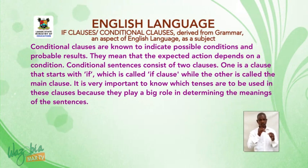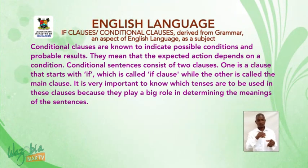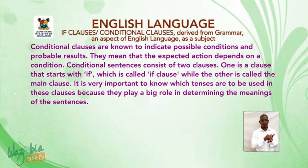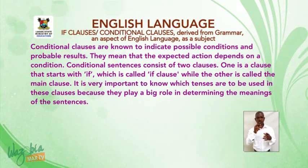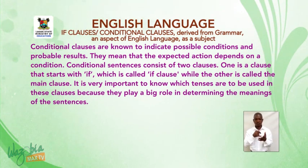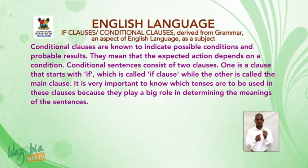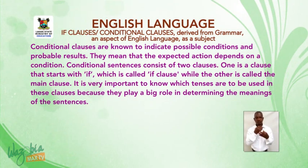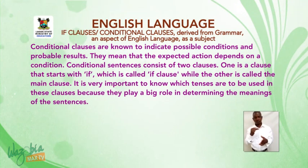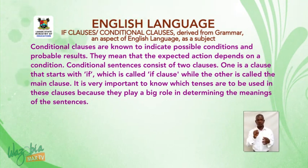Conditional clauses are known to indicate possible conditions and probable results. They mean that the expected action depends on a condition. Conditional sentences consist of two clauses: one is a clause that starts with 'if', which is called the if clause, while the other is called the main clause. It is very important to know which tenses are to be used in these clauses because they play a big role in determining the meanings of the sentences.